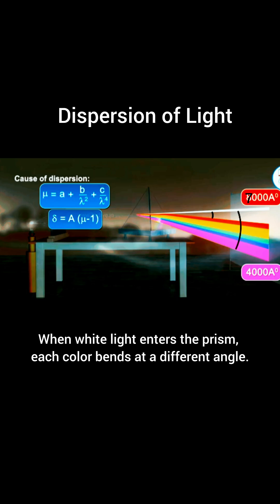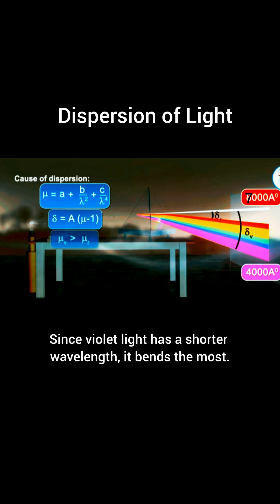When white light enters the prism, each color bends at a different angle. Since violet light has a shorter wavelength, it bends the most. Red light with a longer wavelength bends the least.